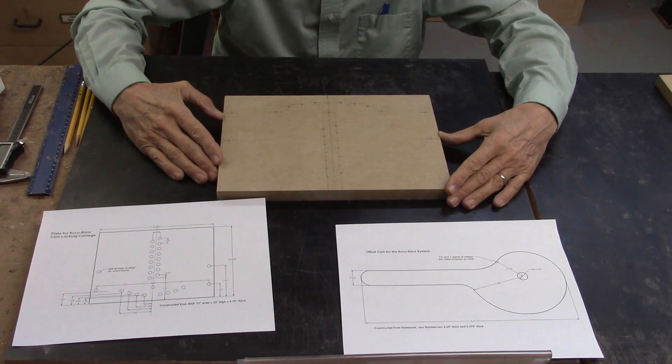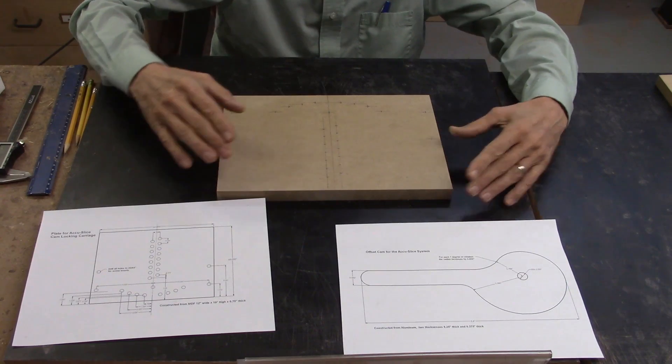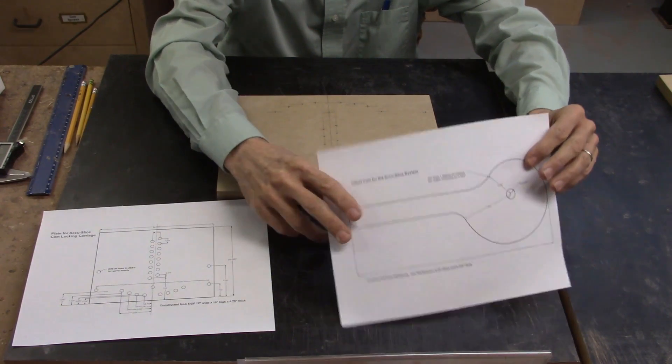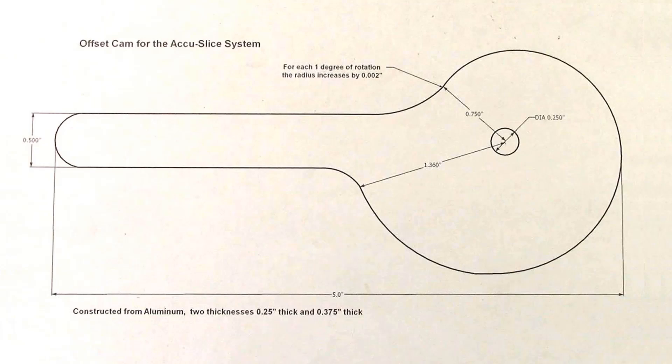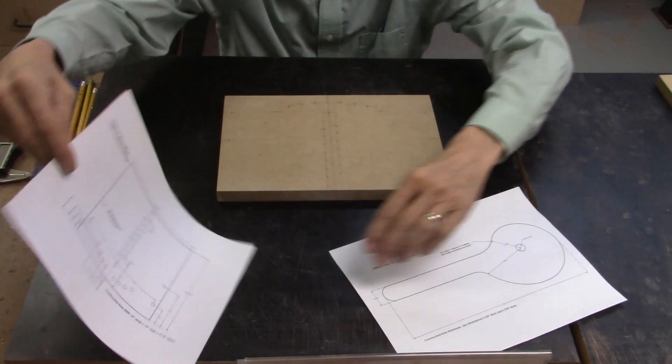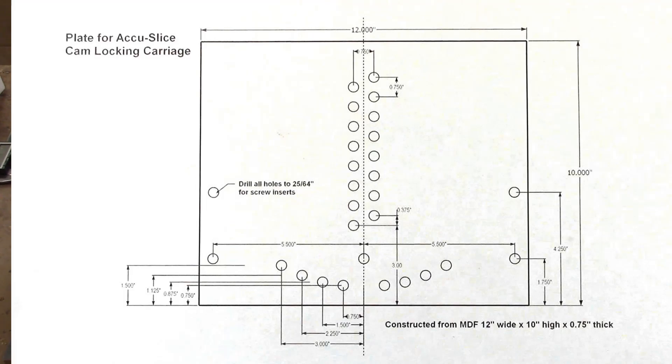I'm now going to make my fourth and hopefully final version of the clamping sacrificial fence for the Accu-Slice carriage. I designed the components such as the offset cam as well as the backing plate using SketchUp software.